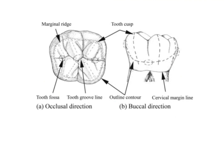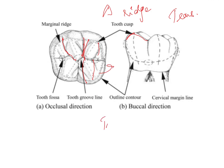The cusp is an elevation that converges towards the center, and each cusp gives rise to what is called a triangular ridge. This ridge coincides with the ridge of the opposite cusp and gives rise to what is called a transverse ridge - where the triangular ridge of one cusp coincides with the triangular ridge of the opposing cusp.